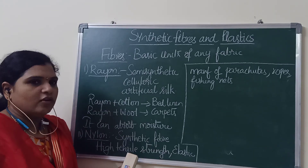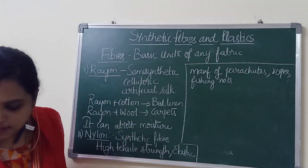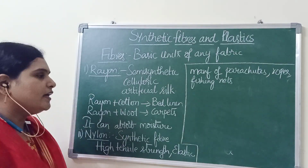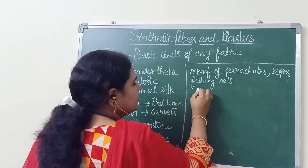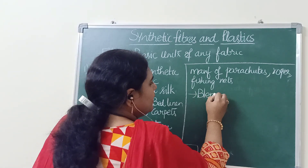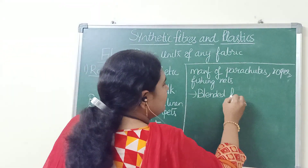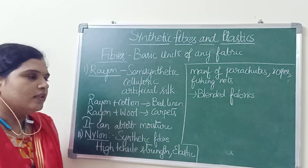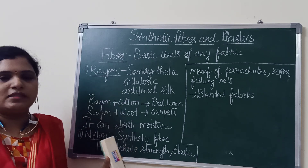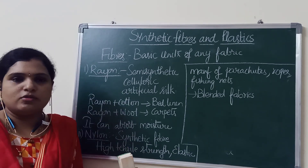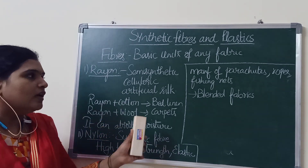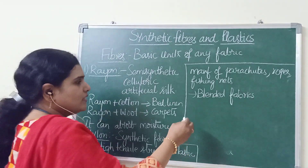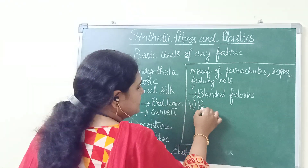Nylon can be mixed with other natural fibers to make blended fabrics, used for manufacturing different products. As it has high tensile strength and elasticity, it is also used in making parachutes, trekking ropes, and fishing nets.